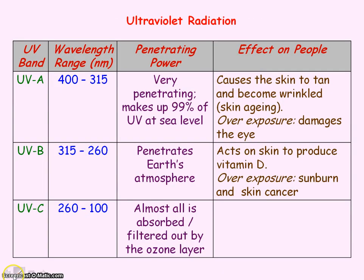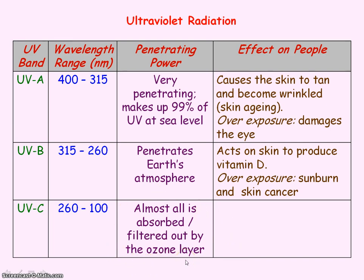You need to know the characteristics and hazards of ultraviolet radiation. Ultraviolet is made up of three bands: UVA, UVB, and UVC. UVC is almost all absorbed by the ozone layer, so it doesn't reach the Earth's surface, whereas 99% of the UV at sea level is in the form of UVA.